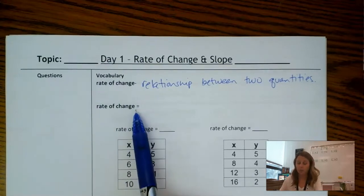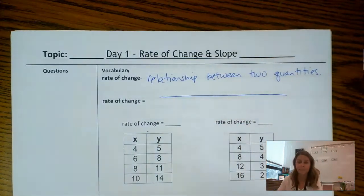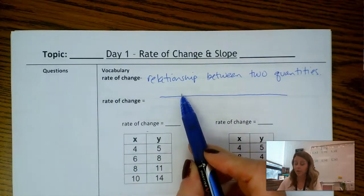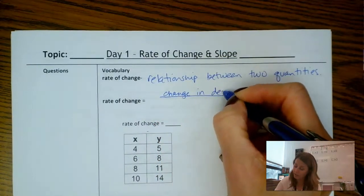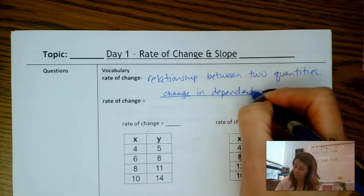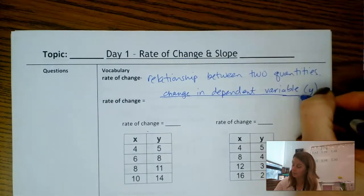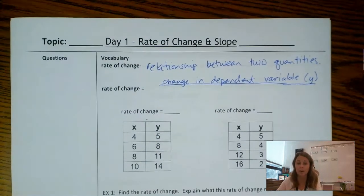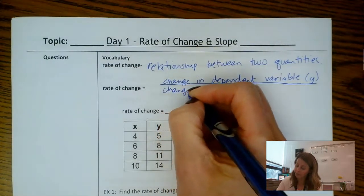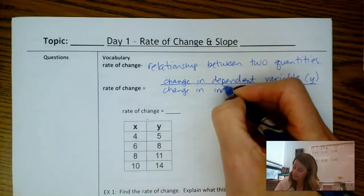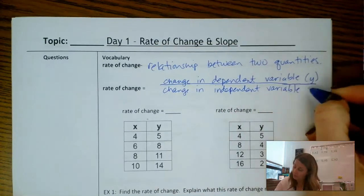Rate of change equals - we're going to write a couple formulas down here. So I want you to make a really large fraction bar. In the numerator of this fraction I'm going to write change in dependent variable, change in dependent variable, and let's put y in parentheses because our dependent variable is y in our equations. And then in the denominator we're going to have change in independent variable, and that of course goes with the x.